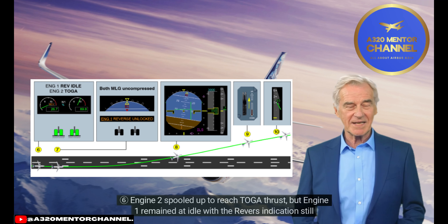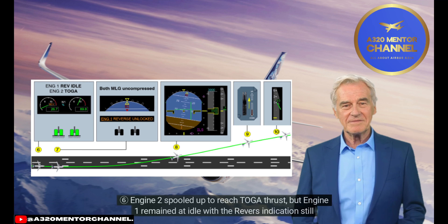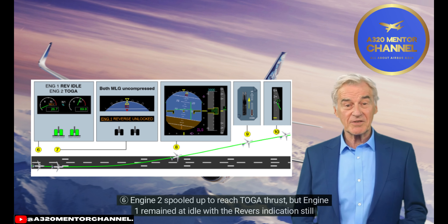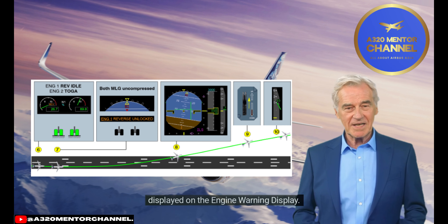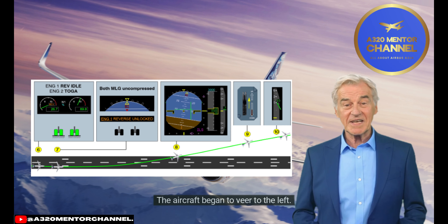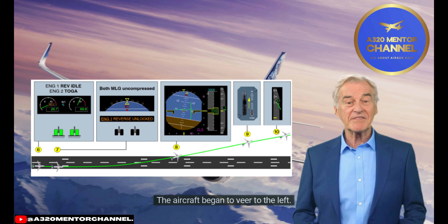Step 6: Engine 2 spooled up to reach TOGA thrust, but engine 1 remained at idle with the reverse indications still displayed on the engine warning display. The aircraft began to veer to the left.